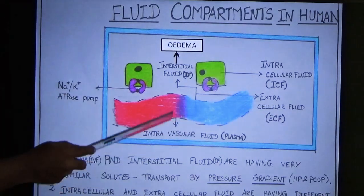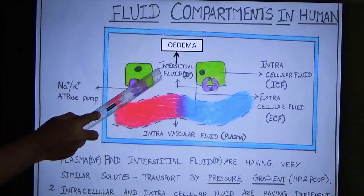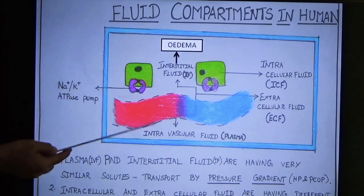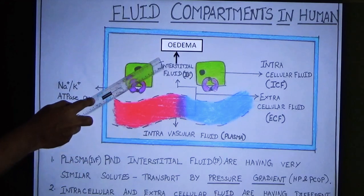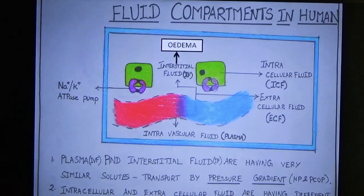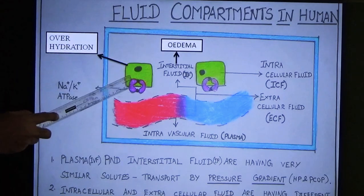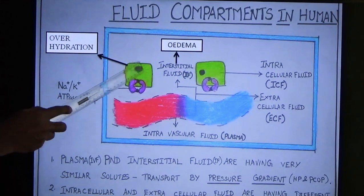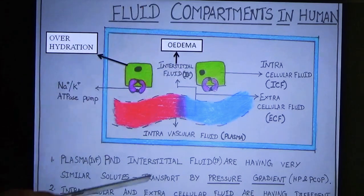Normally, interstitial fluid is present — for a 60 kg adult, around 11 liters of interstitial fluid are present. When fluid accumulation is abnormal, it is called edema. Overhydration, by contrast, is fluid accumulation inside the cell. Fluid accumulation into the interstitial space is edema; fluid accumulation inside the cell is overhydration.